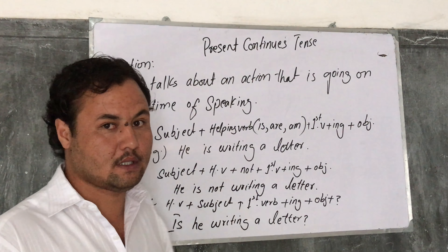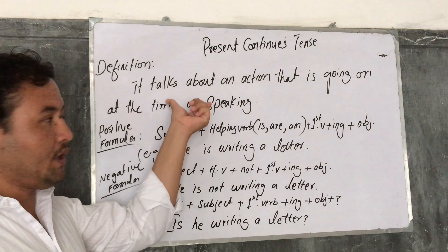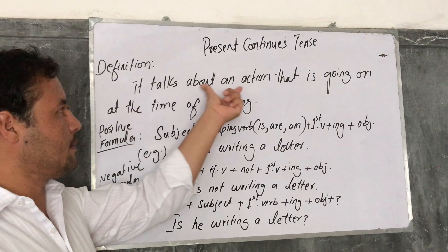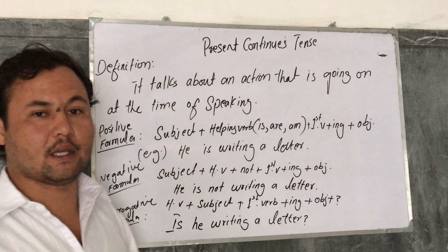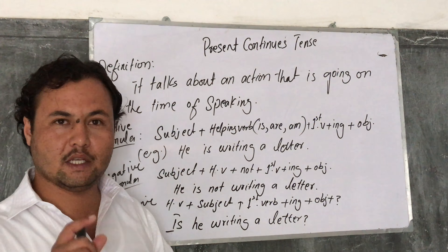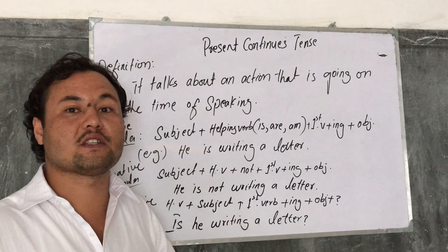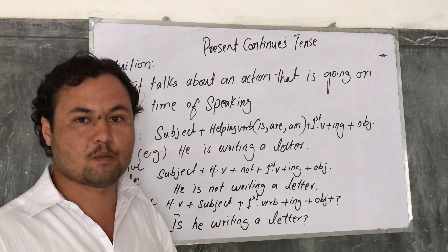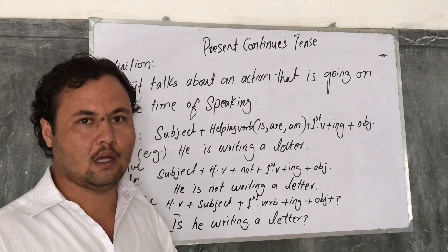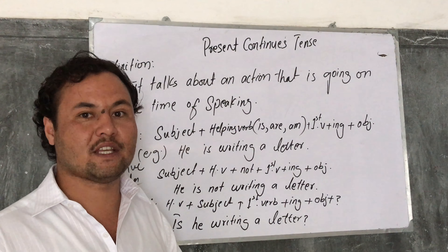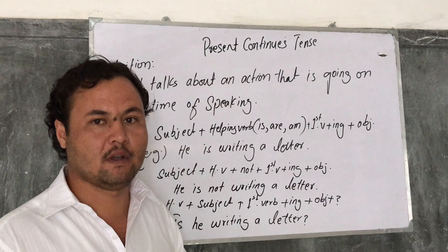Now what is present continuous tense? The definition I have written over here — it talks about an action that is going on at the time of speaking. For example, right now I am speaking English. I am teaching grammar. Means it is going on at the time of speaking.